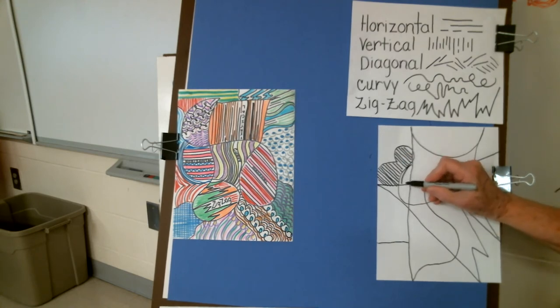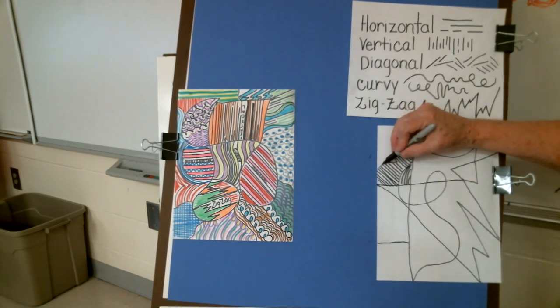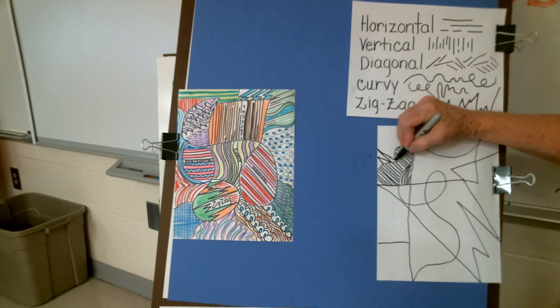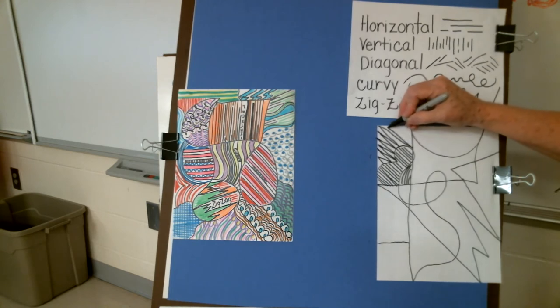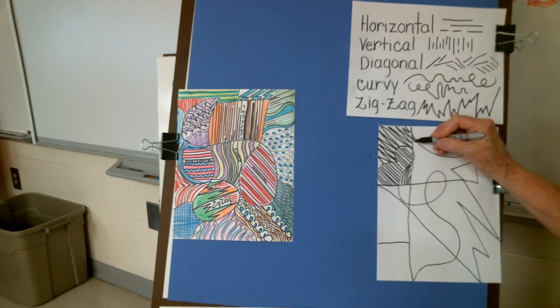So I'm going to put in a curve right in here. So that kind of makes those two areas very distinct. Up here, I'm going to add some zigzags so you can really see the difference between these areas. So just try to put in really different types of lines in each one of these areas.